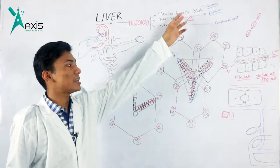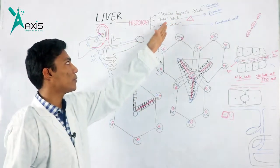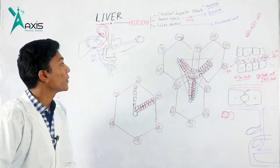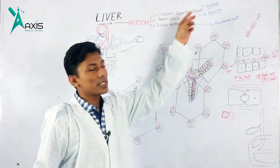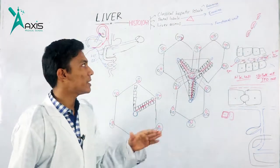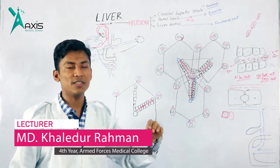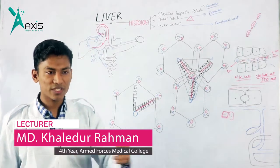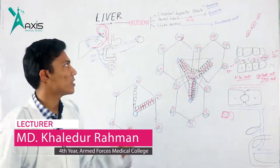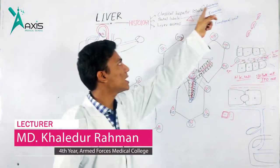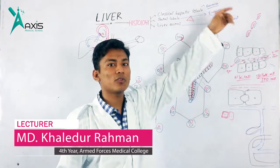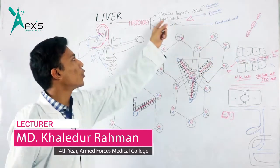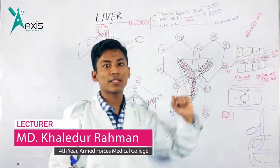We are going to talk about the classical hepatic lobule. The classical hepatic lobule is an anatomical unit. It is related to the endocrine function — the secretion of bile into the blood. The classical hepatic lobule is considered an anatomical unit with an endocrine function.